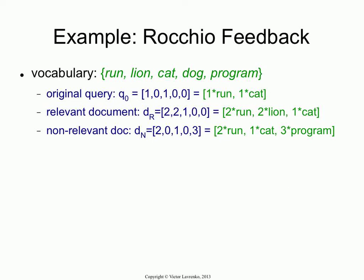So suppose the user gave you a relevant document which had two occurrences of run, two occurrences of lion, and one occurrence of cat, and one non-relevant document which had two occurrences of run, one occurrence of cat, and three occurrences of program.